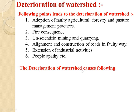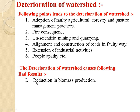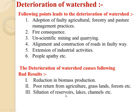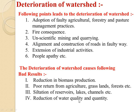The deterioration of watershed causes the following bad results: number 1, reduction in biomass production; then poor return from agriculture, grassland, forest, etc.; then siltation of reservoirs, lakes, channels, etc.; then reduction of water quality and quantity; and lastly, creation of poverty in the area.